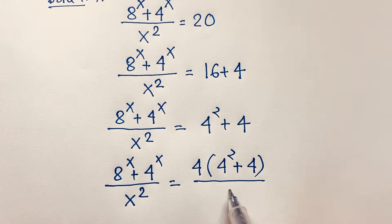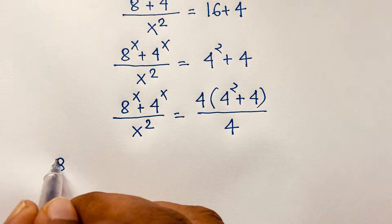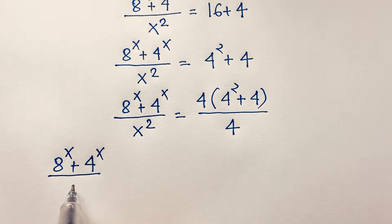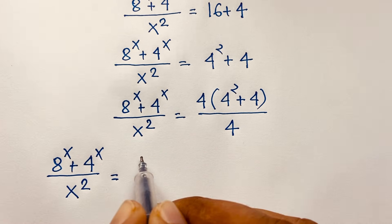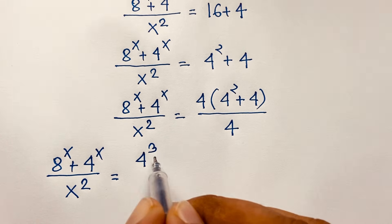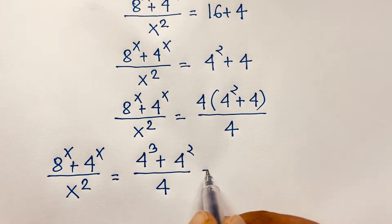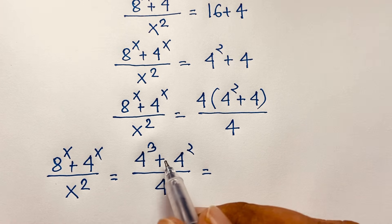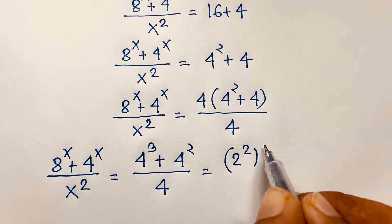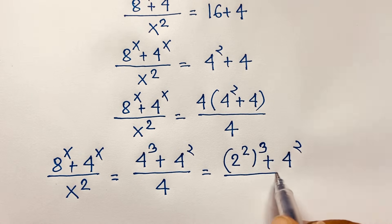After manipulation we get: 4 times 4^x plus 4^x over x squared equals 4 times 4^2, which gives 4^3, plus 4^2 over 4.